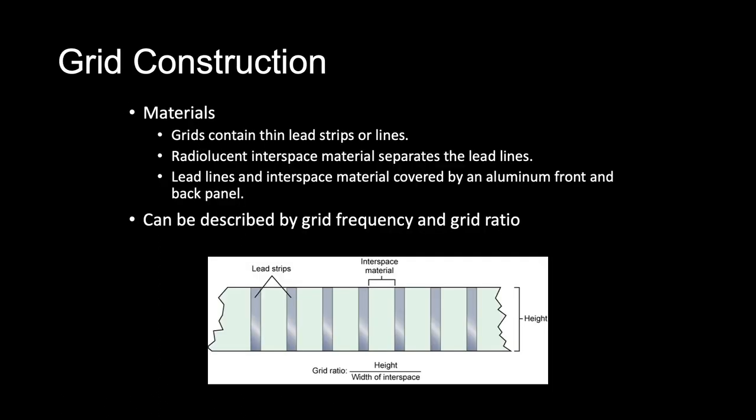Grids contain thin lead strips or lines that have a precise height, thickness, and space between them. Radiolucent interspace material separates the lead lines; the interspace material typically is made of aluminum. An aluminum front and back panel cover the lead lines and interspace material of the grid. Grid construction can be described by grid frequency, which expresses the number of lead lines per unit length in inches, centimeters, or both. Grid frequencies can range from 25 to 45 lines per centimeter or 60 to 110 lines per inch, with a typical value of 40 lines per centimeter or 103 lines per inch.